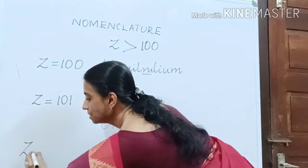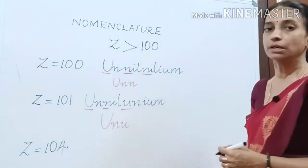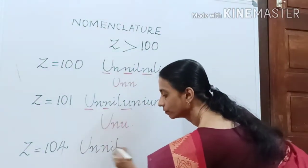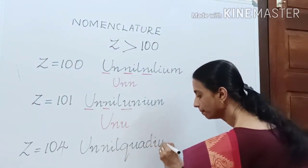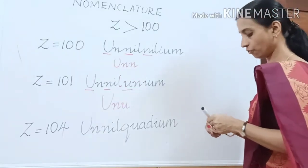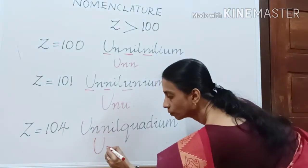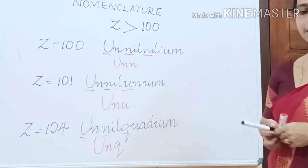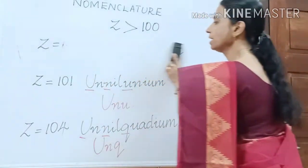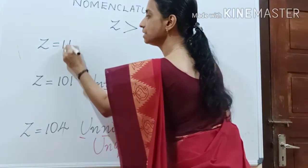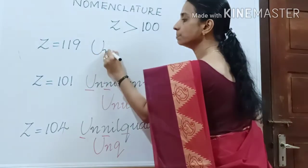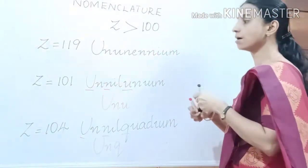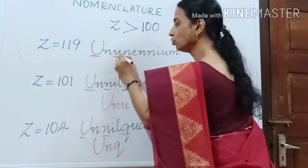Suppose Z is equal to 104, the name will be 'unnilquadium', and the symbol will be 'Unq'. Now tell me: what will be the naming for Z = 119? The naming would be 'ununennium', and the symbol will be 'Uue'.